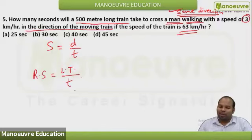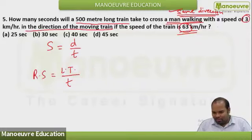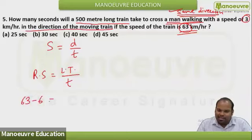So this is my formula. What is now relative speed? Subtraction. 63-3, so 63-3 will be 60. Sorry, I have written 6. So this is how you need to do it.